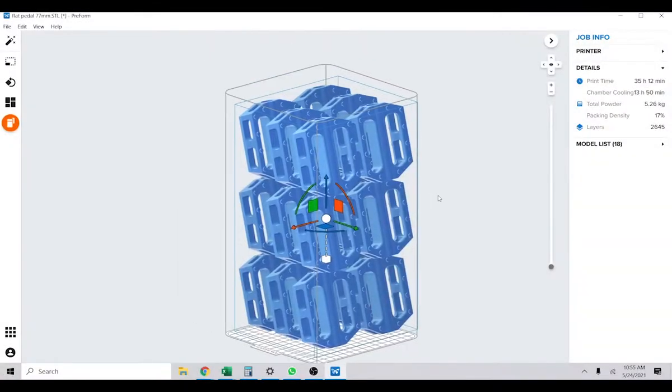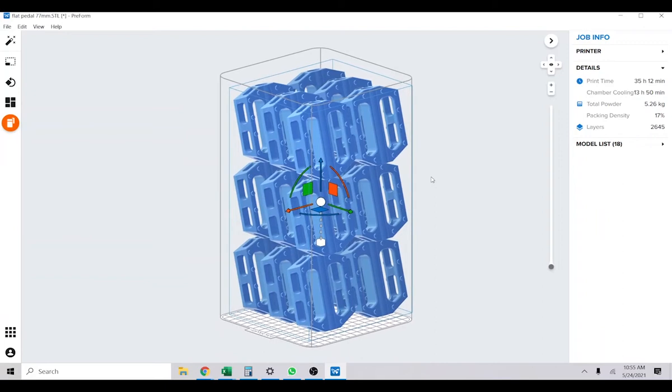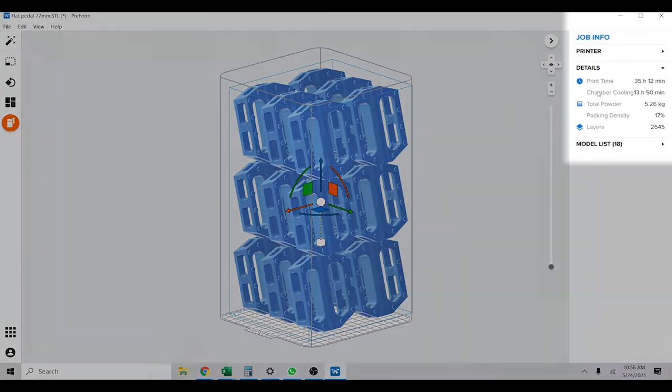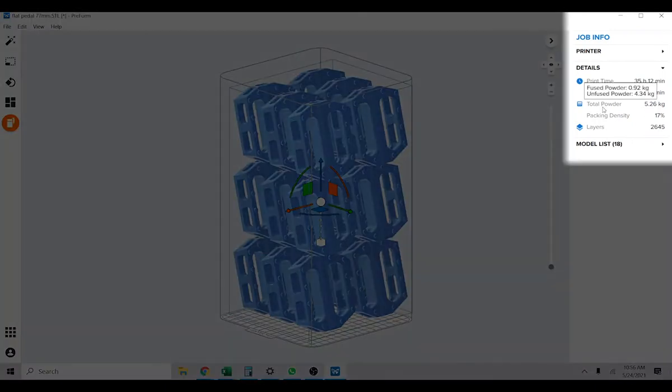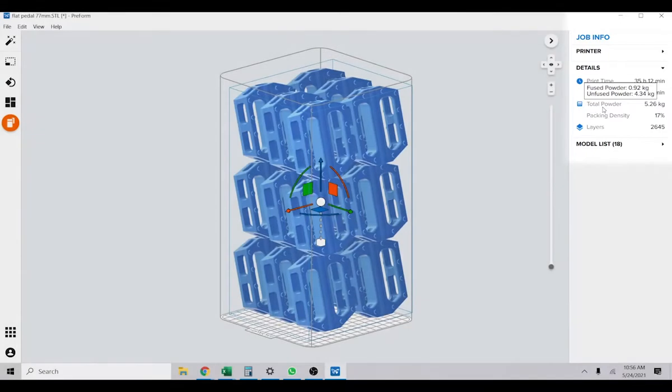First things first, let's load up Preform. This slicing software is free to download even if you don't have a Formlabs printer. Like most slicers, it provides estimates for print time and material consumption, and it's a great tool for familiarizing yourself with the process. I'd highly recommend downloading this program and following along with your own files.